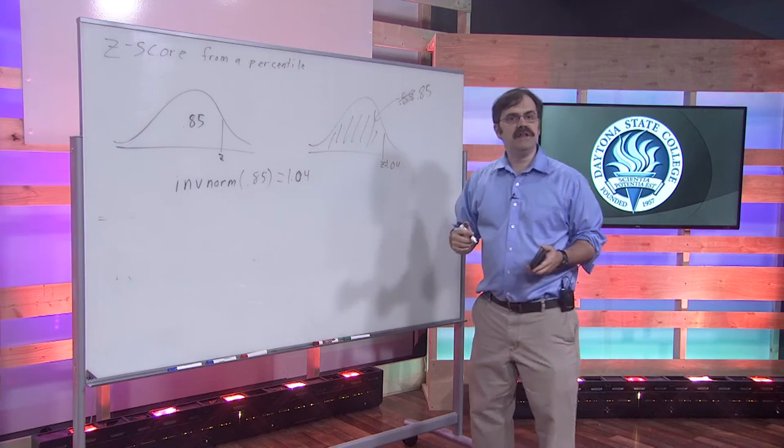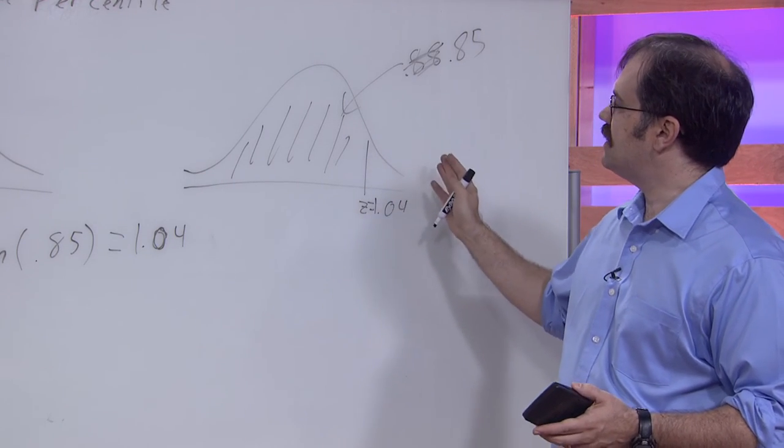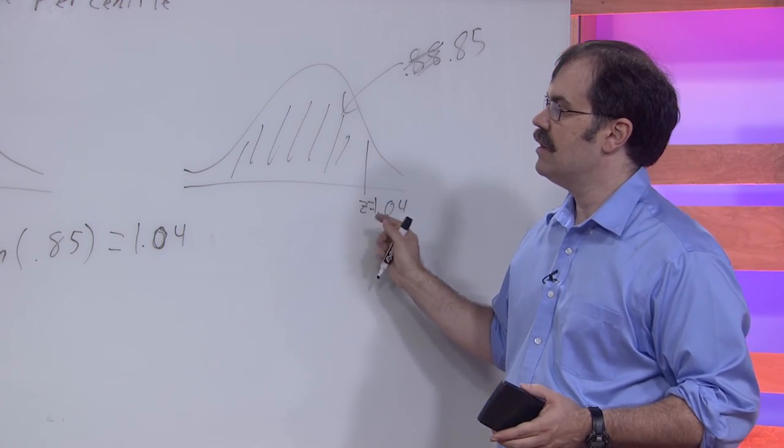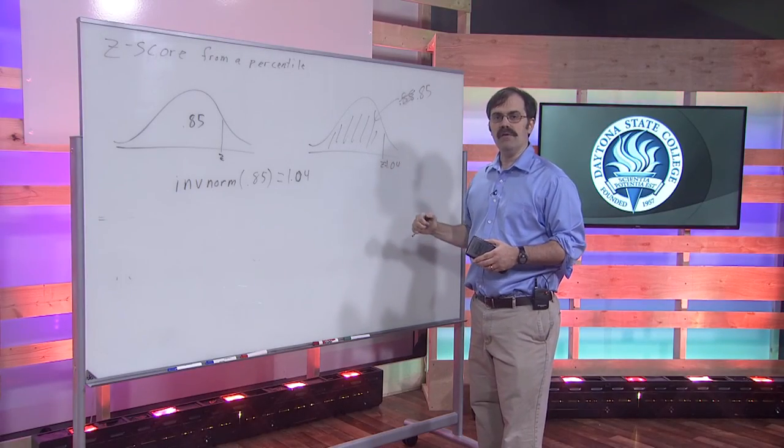Or equivalently, you could say that 85% of your scores were lower than or had a z-score lower than 1.04.